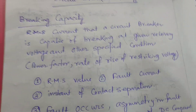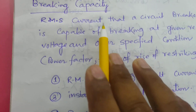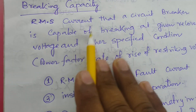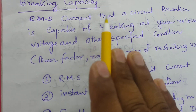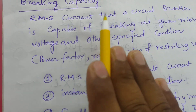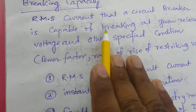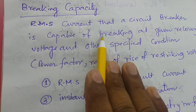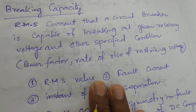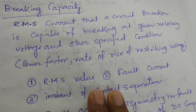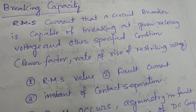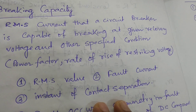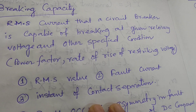So what is the breaking capacity? It is the RMS current that a Circuit Breaker is capable of breaking at a given recovery voltage and under specified conditions. This is a very important capacity of a Circuit Breaker — when you are purchasing any circuit breaker or doing some modifications, this breaking capacity is very important.